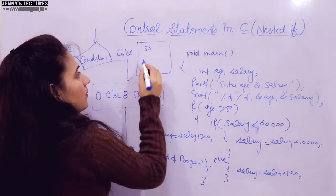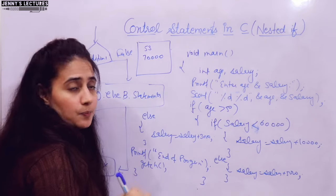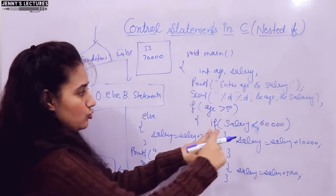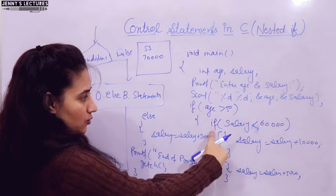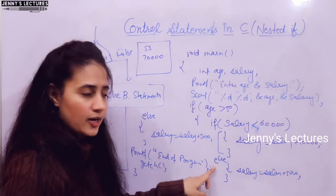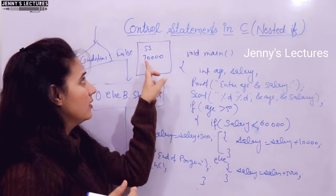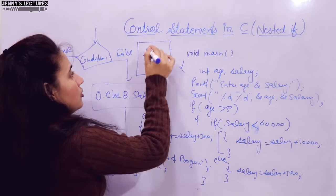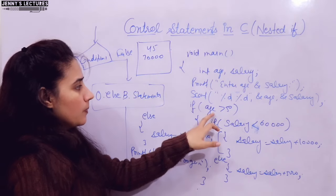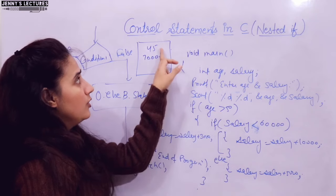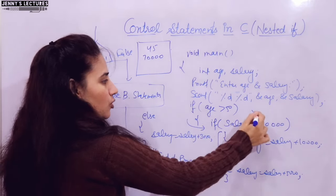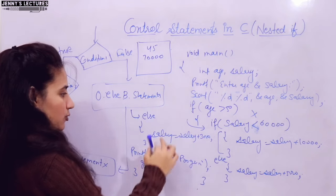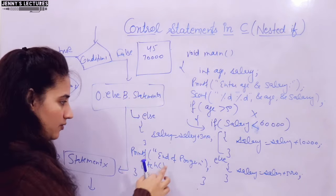Now suppose age = 53 and salary = 70,000. Age > 50 is true, so we enter the if block. Salary < 60K — no, 70K is greater than 60K, so this inner if is not executed. Control goes to the inner else: salary is incremented by 5,000, giving 75,000. The outer else is not executed. Output: 75,000 and 'end of program'. Now if age = 45 and salary = 70K: age > 50 is false, inner condition not checked, outer else executes — salary incremented by 3,000, giving 73,000.